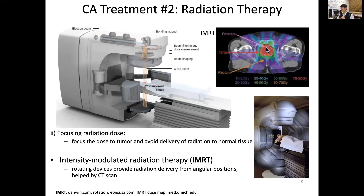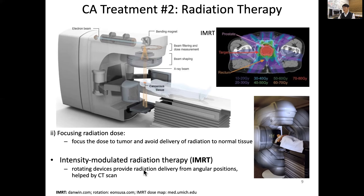If the tumor — in this case, the prostate — is inside, we shine once in this direction, then another, another, another direction repeatedly. The surrounding normal tissue is shined only one time, while the tumor tissue is shined multiple times. By this intensity modulated radiation therapy, we can effectively focus more radiation only to the tumor by rotating the device to provide radiation delivery from multiple angular positions.